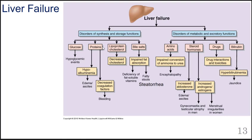The liver is responsible for producing certain factors that contribute to the coagulation cascade, meaning that a person is more likely to bleed. The liver is also responsible for producing cholesterol, which is a very important building block for our bodies. It's a major component of all cell membranes and is used to make many essential molecules such as hormones, fat-soluble vitamins, and bile acids. A reduction in cholesterol production will affect the production of many other substances and the integrity of cells in our body.